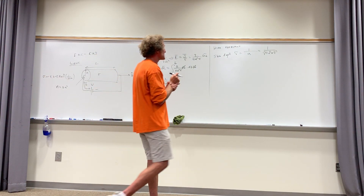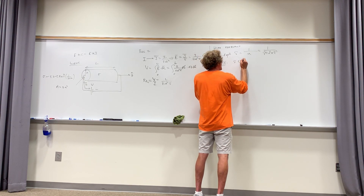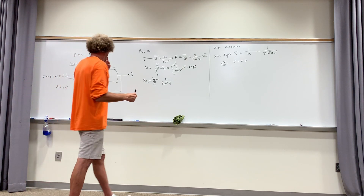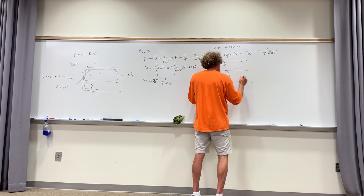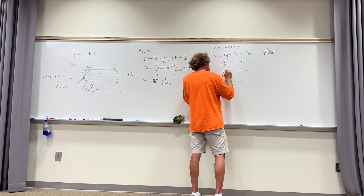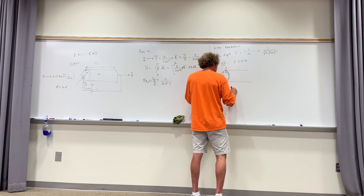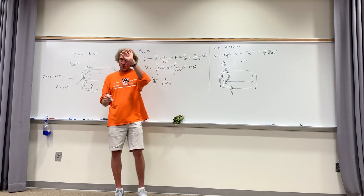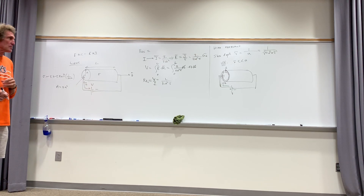If the skin depth δ is much less than radius A, all the current is concentrated within one skin depth of the outer edge — it doesn't flow in the center. Assuming the current is uniformly distributed in that thin shell, J = I / (2πAδ) in the AZ direction, where 2πAδ is the area of the outer strip — the circumference 2πA times the thickness δ.